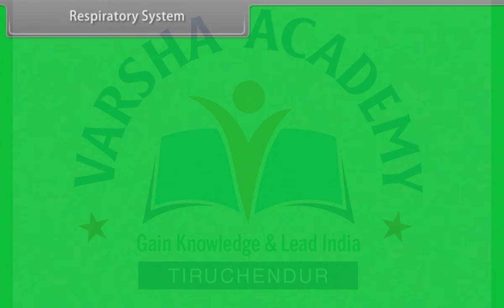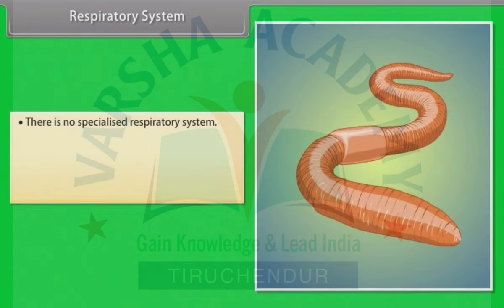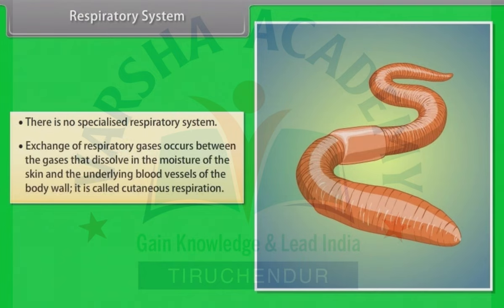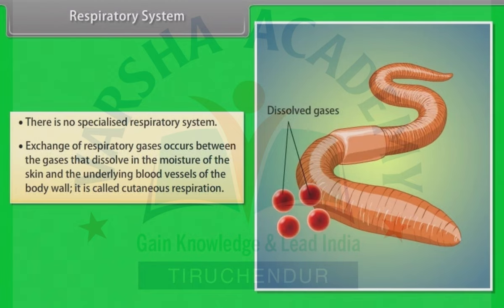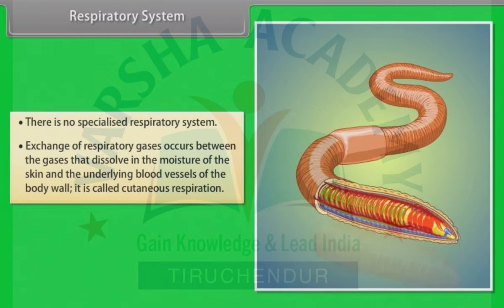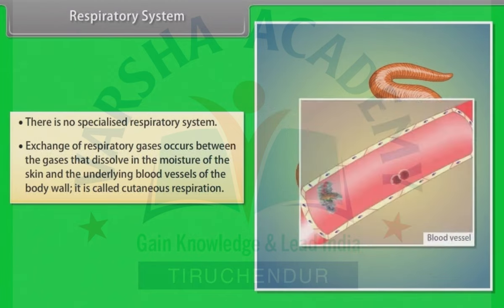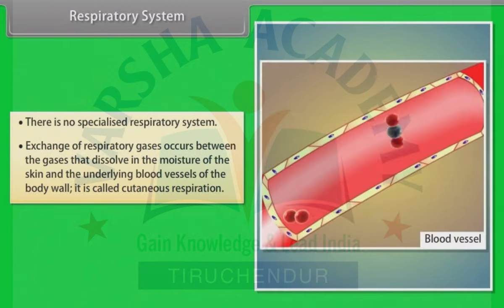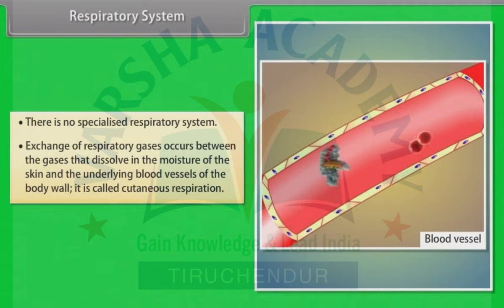Respiratory system: There is no specialized respiratory system in earthworm. Exchange of respiratory gases occurs between the gases that dissolve in the moisture of the skin and the underlying blood vessels of the body wall. This is called cutaneous respiration.